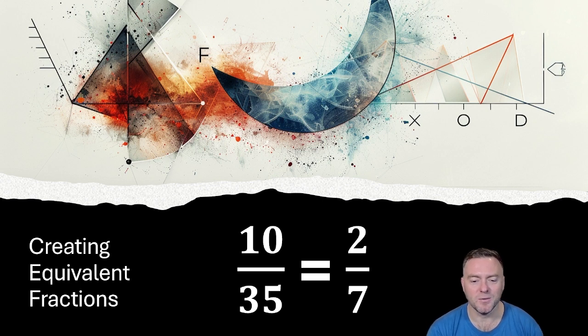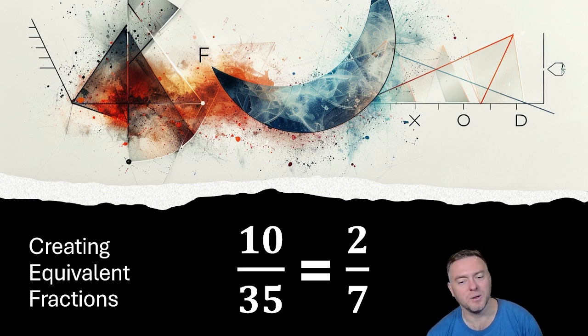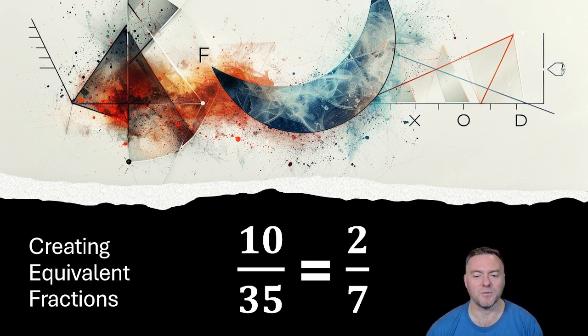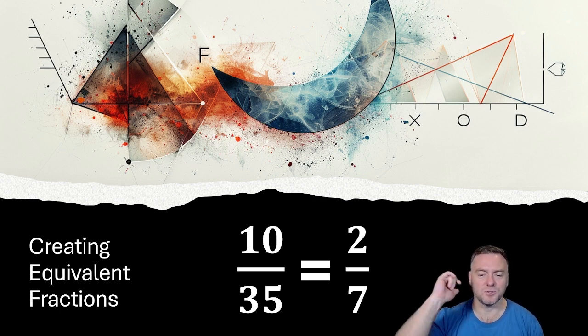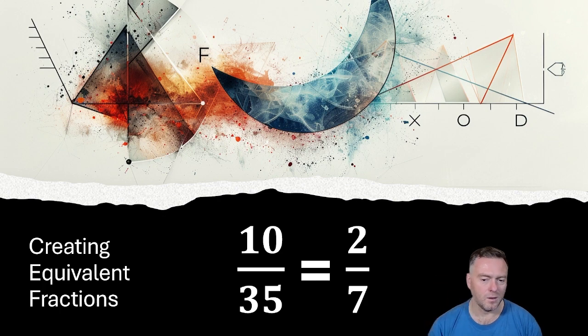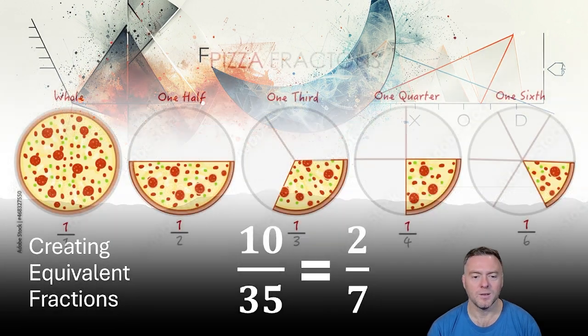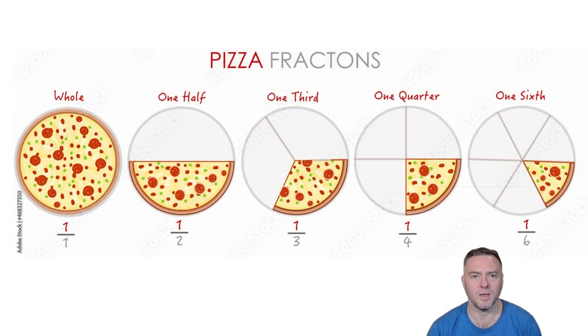So if you look at 10 over 35, you can divide both of those by 5, which is why it's equivalent to the same as if you had a fraction of 2 out of 7.